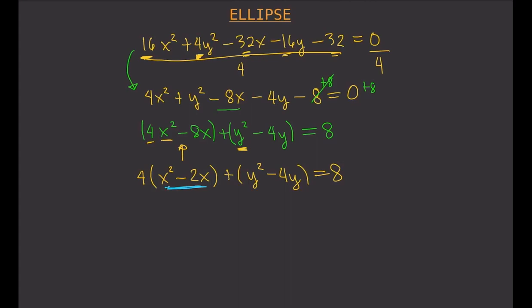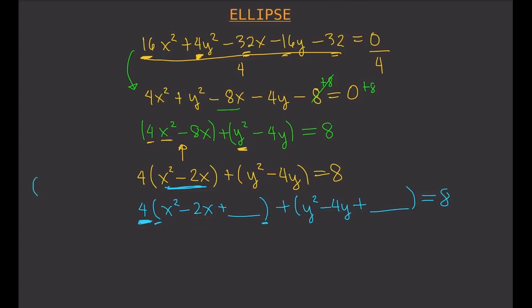Now do completing the square for x squared minus 2x: write x squared minus 2x plus some number inside parentheses, and y squared minus 4y plus some number, equals 8. Make sure to keep the factor 4 outside the parenthesis. To find that number, take the coefficient of x, which is negative 2, divide by 2, and square it: negative 2 over 2 is negative 1, squared is 1.